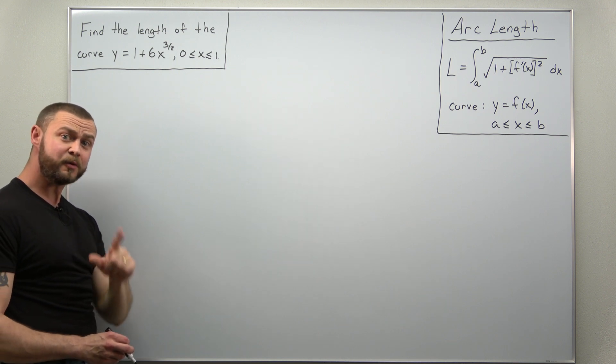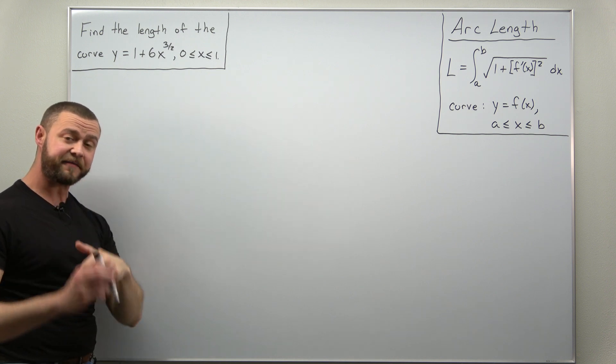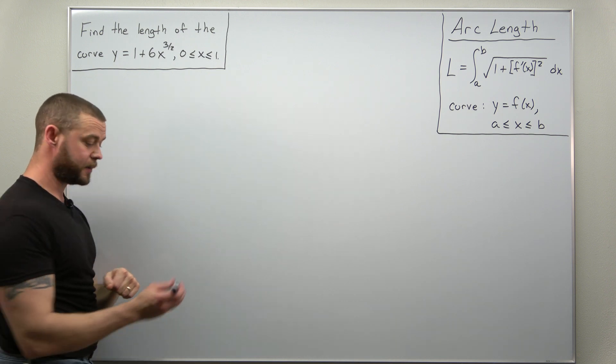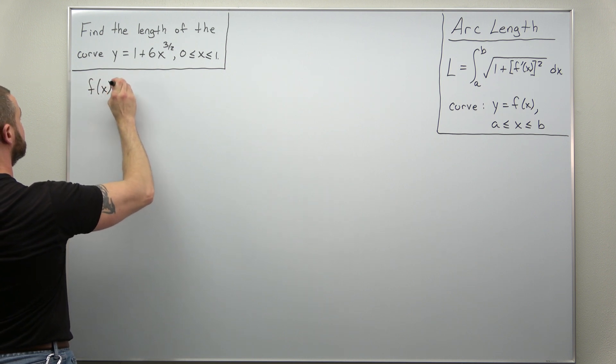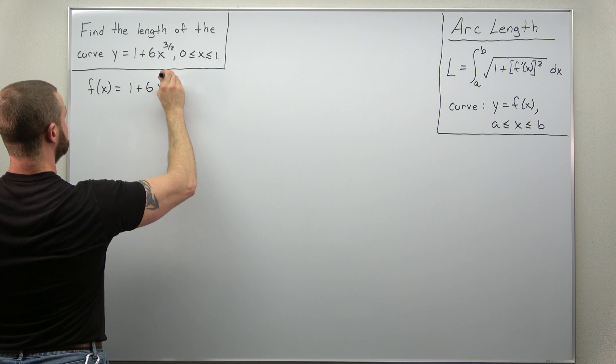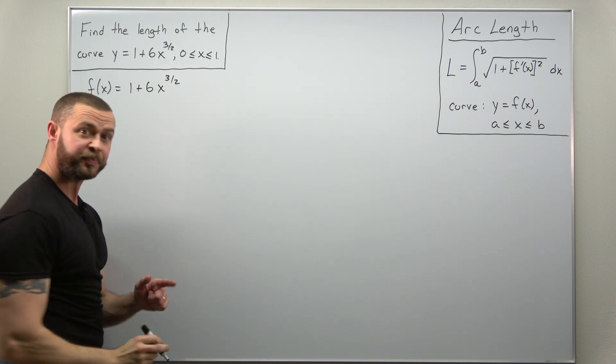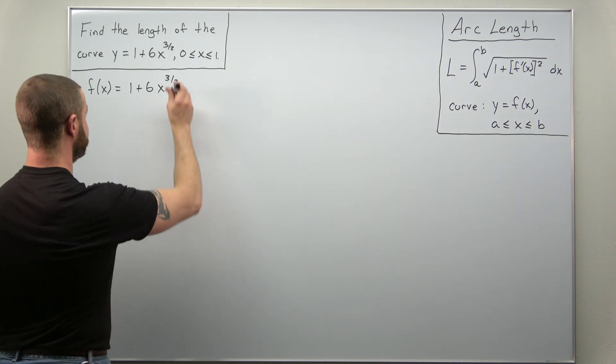The only thing we need to do is calculate a first derivative for our curve there, a first derivative of that function, and then plug everything in. So let's identify f(x) as 1 plus 6x to the 3 halves. And to calculate the first derivative, we just need the basic power rule for derivatives.